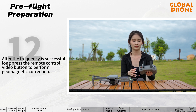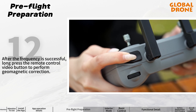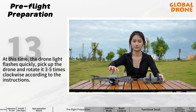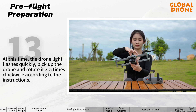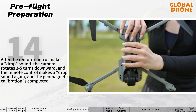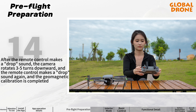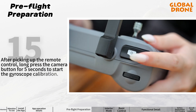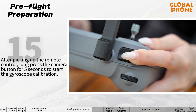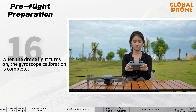After frequency matching is successful, long press the remote control video button to perform geomagnetic correction — at this time the drone light flashes quickly. Pick up the drone and rotate it three to five times clockwise according to the instructions. After the remote control makes a drop sound, rotate the camera three to five turns downward until the remote control makes a drop sound again and geomagnetic calibration is completed. Then long press the camera button for five seconds to start gyroscope calibration. When the drone light turns on, gyroscope calibration is completed.